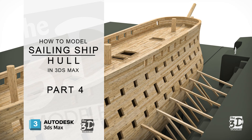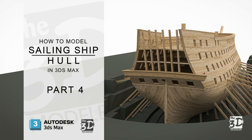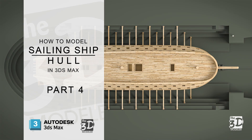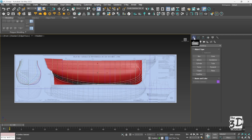Hey everyone, and welcome to the final part of modeling a sailing ship hull using ship planes in 3ds Max. Previously we finished modeling the main section and the stern part of the hull. Today we will continue modeling the remaining part of the stern and we will model the bow part of the hull. So let's get started.